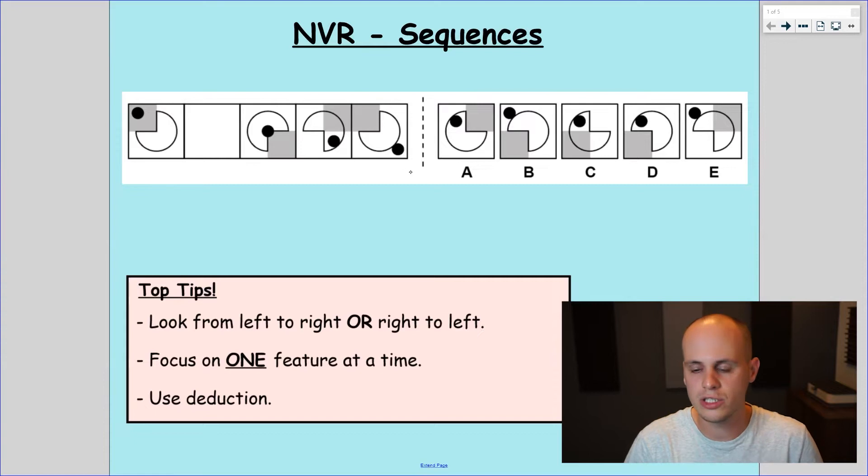So having a look at the question on the screen right now, we notice we are missing one square. Sequences can go left to right or right to left. It doesn't matter in which way we look at it, which is my first top tip.